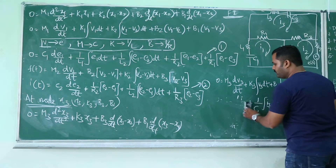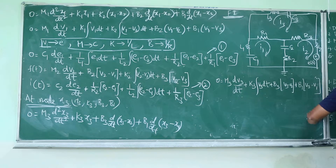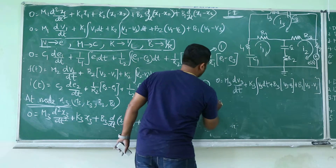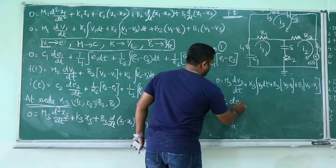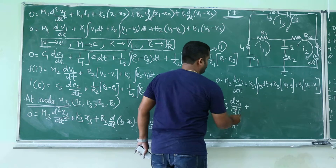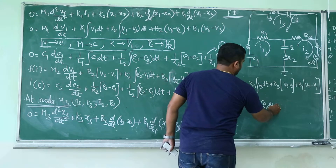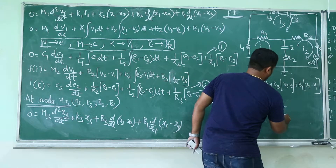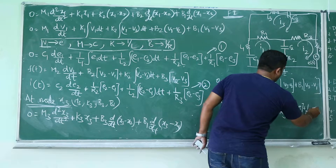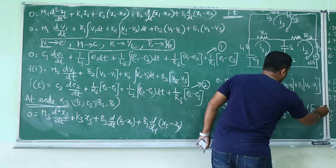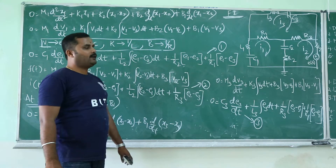Coming to the third equation — the force-current analogous equation. So 0 equals C3 into dE3 by dt plus 1 by L3 integration of E3 dt plus 1 by R3 into (E3 minus E2) plus 1 by R1 into (E3 minus E1). This is your third equation for the force-current analogous network.